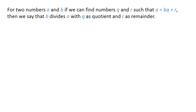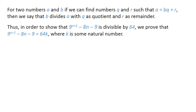For two numbers a and b, if we can find numbers q and r such that a equals b times q plus r, then we say that b divides a with q as quotient and r as remainder. Thus, in order to show that 9 raised to the power n plus 1 minus 8 times n minus 9 is divisible by 64, we need to prove that it equals 64 times k, where k is some natural number.